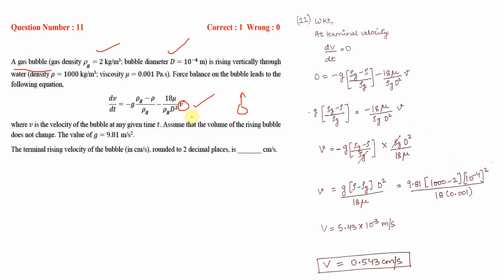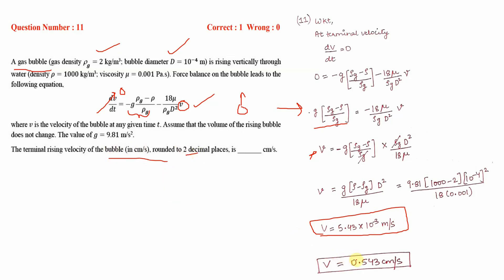At terminal velocity, acceleration is zero because the net force on the object is zero, so dV/dt becomes zero. Isolating the velocity and substituting the known values — g (acceleration due to gravity), diameter, viscosity, and density of the gas — we calculate the velocity of the bubble as 5.43 × 10⁻³ m/s. Converting to centimeters per second and rounding to two decimal places, the answer is 0.54 cm/s.